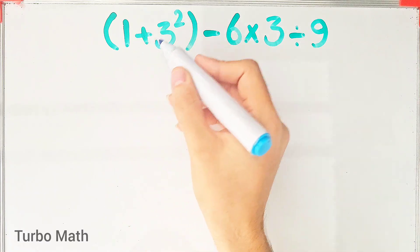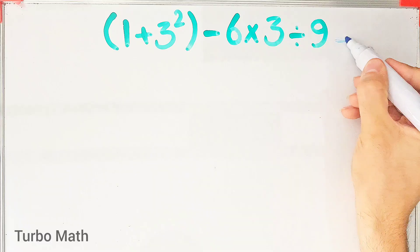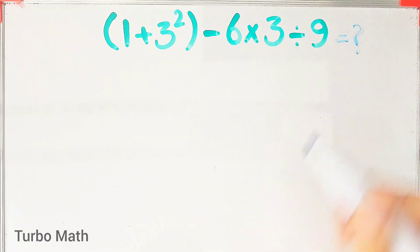1 plus 3 to the power of 2, then minus 6 times 3 divided by 9. What is the answer of this question? Can you solve it?